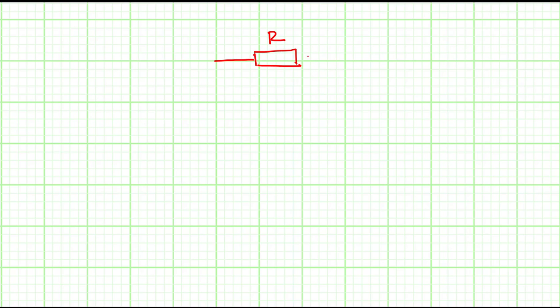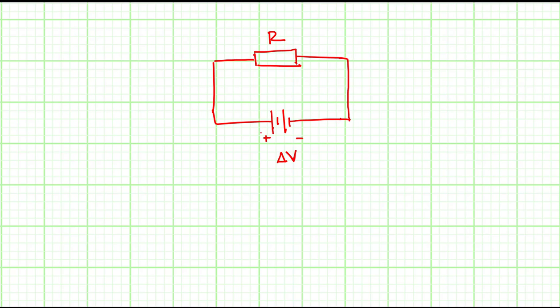Electrical energy and power. Let's consider a circuit with one resistor of resistance R and one battery. This is the positive terminal and this is the negative terminal. The potential difference here is delta V. Normally, the current flows from the positive terminal to the negative terminal — this is the direction of current.